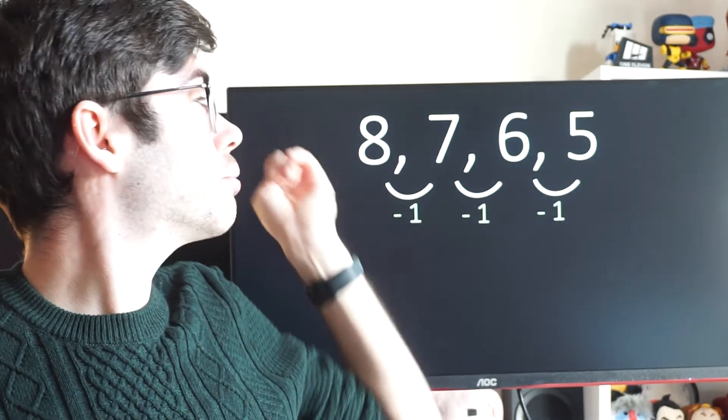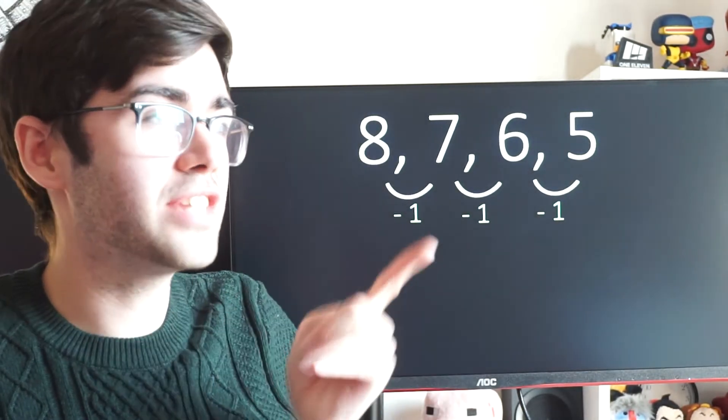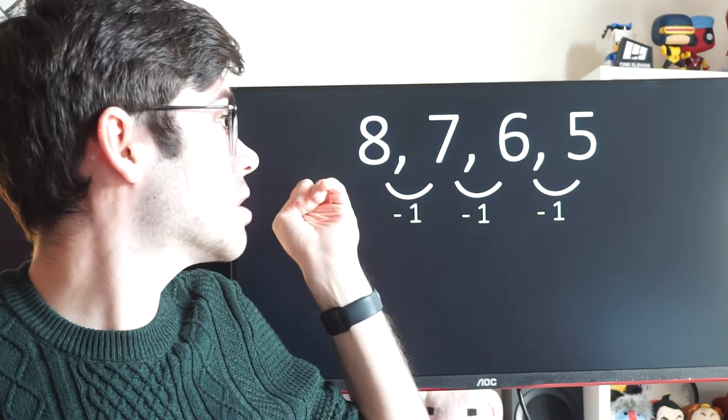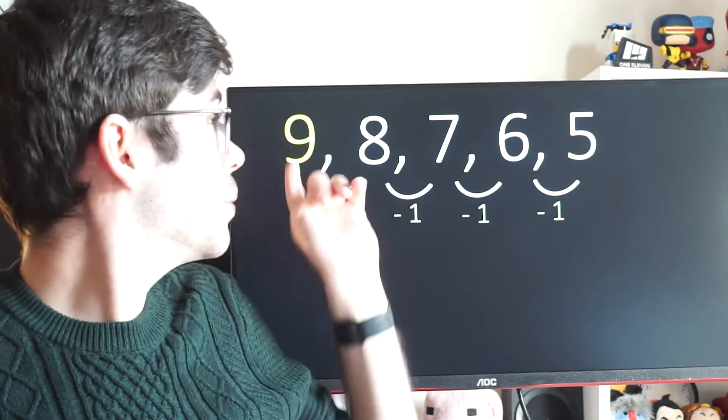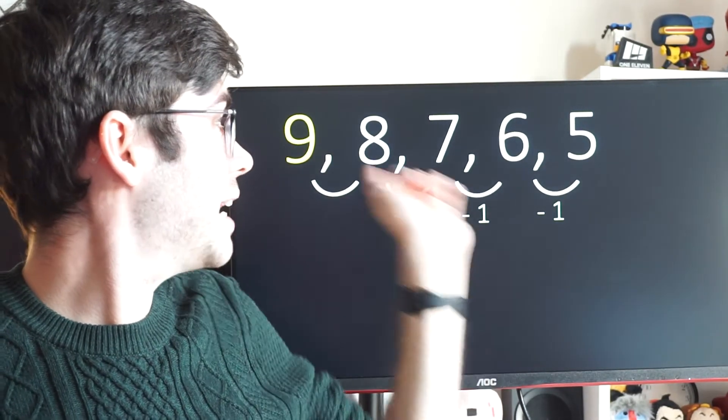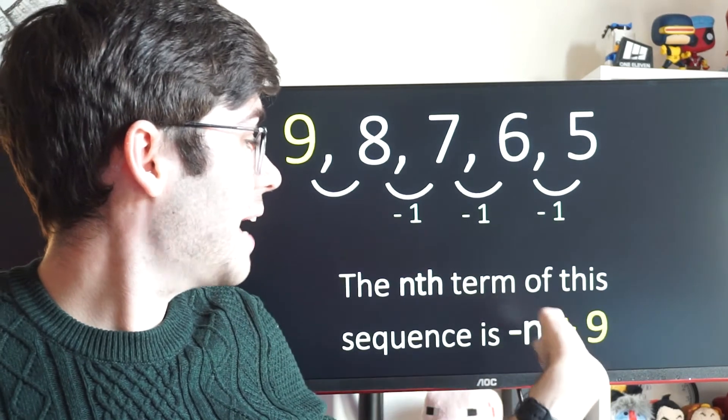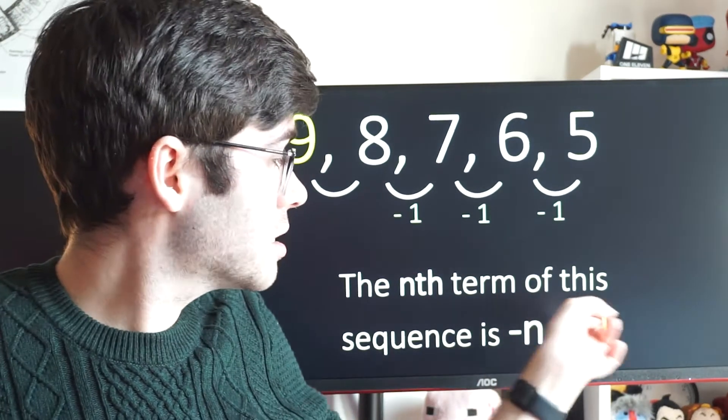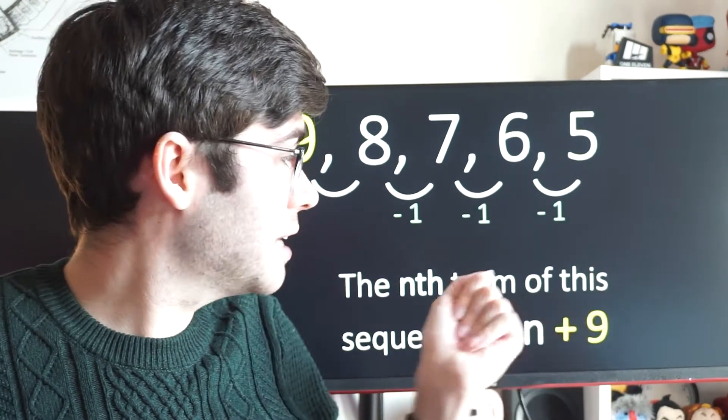If I was to look, what would the previous term have been? I'd have to add 1 to go backwards. The previous term would have been 9. We can use that to generate our nth term. This goes in front of the n, that goes on the end. Minus 1n plus 9. That would be the nth term.